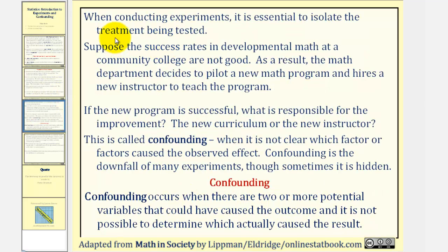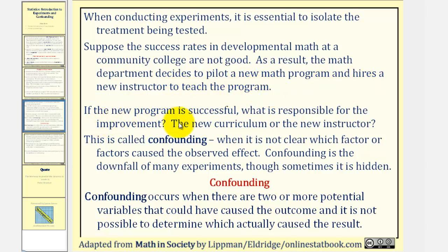When conducting experiments, it is essential to isolate the treatment being tested. Suppose the success rates in developmental math at a community college are not good. As a result, the math department decides to pilot a new math program and hires a new instructor to teach the program. If the new program is successful, what is responsible for the improvement — the new curriculum or the new instructor?